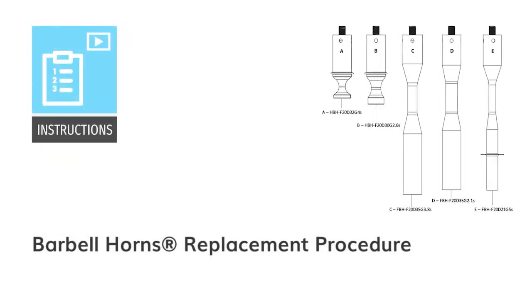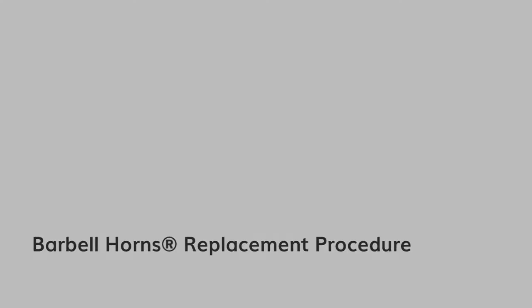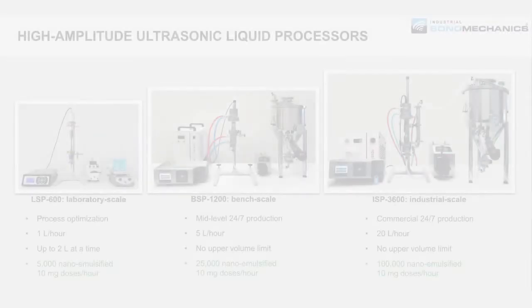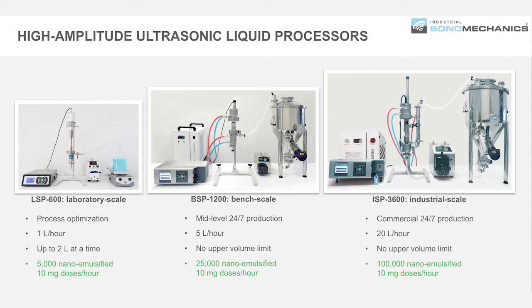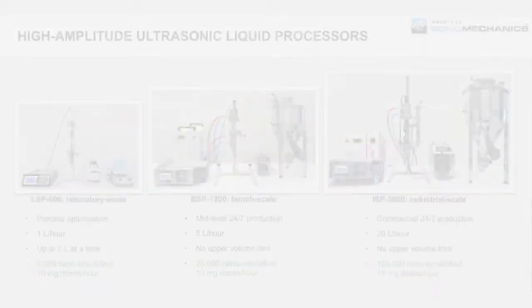In this video we're going to illustrate the procedure for replacing barbell horns using an ISM Bench-scale ultrasonic processor BSP-1200 as an example. This procedure is used when switching to a barbell horn of the same or, as shown in this example, a different type and can be applied with all ISM ultrasonic processors and horn models.